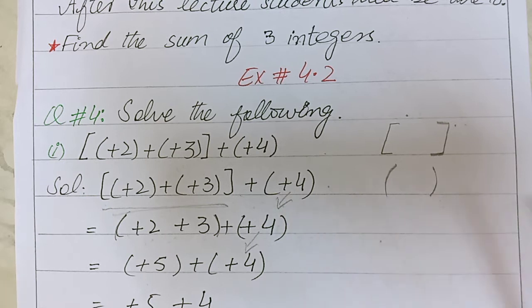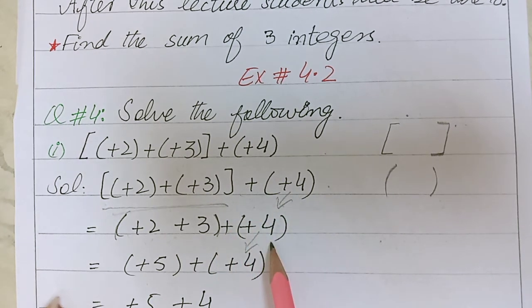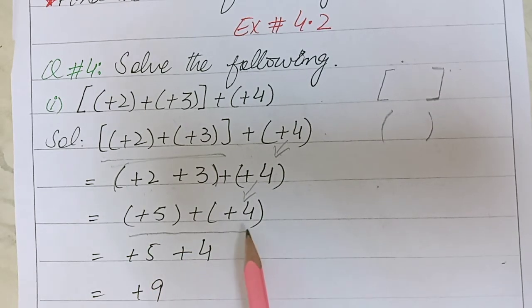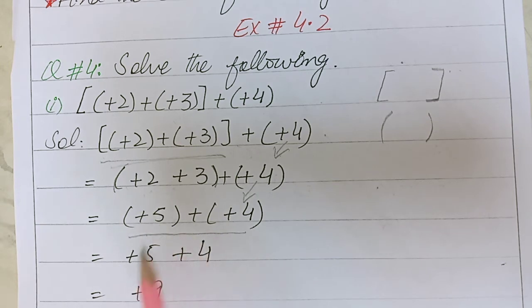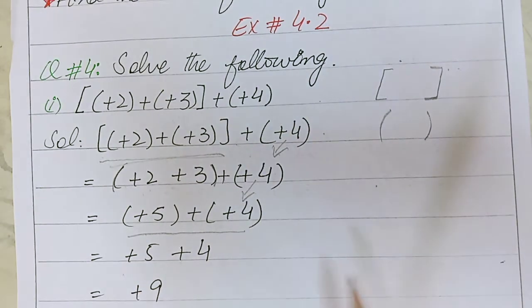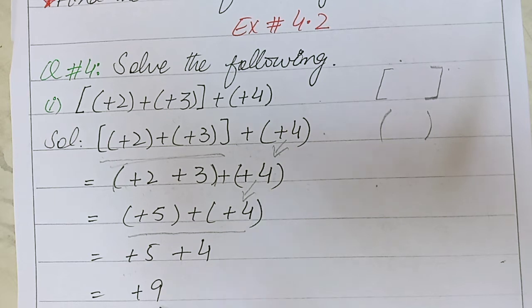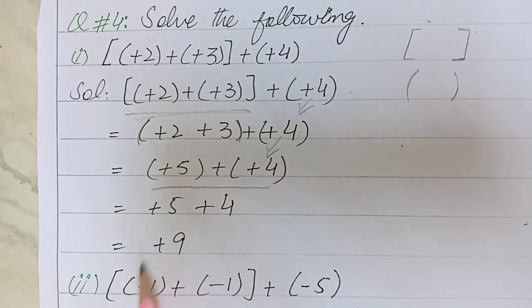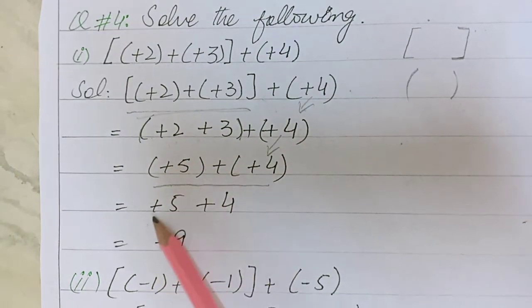...will be written here as it is. So we have now +5 and +4. Open the brackets: +5 plus +4. The answer will be +9 because both signs are the same. Plus 5 plus 4 equals 9, and the sign is positive.